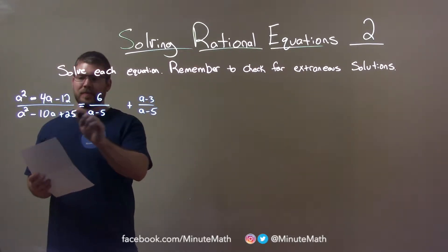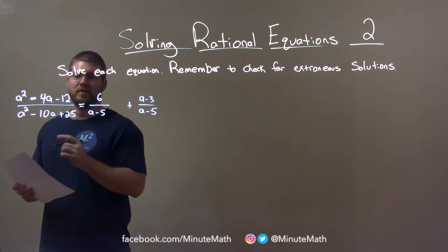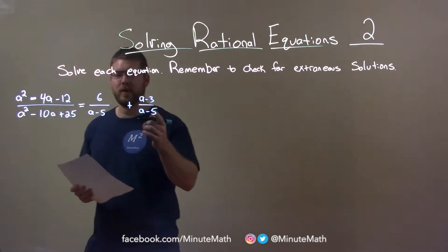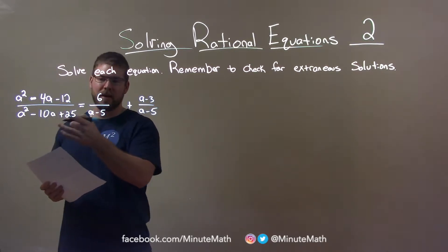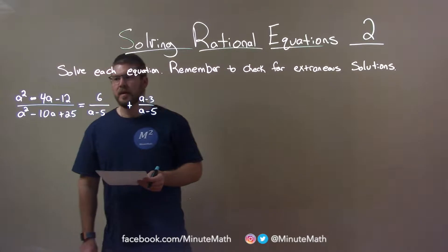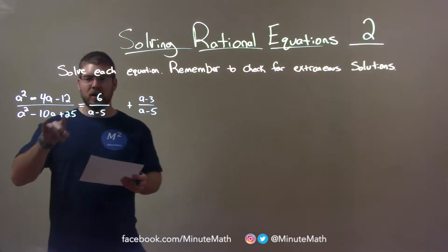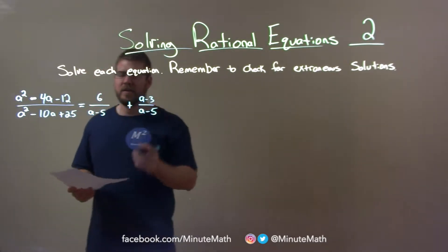I know that because if I multiply it by itself, a times a is a squared, a times minus 5 is minus 5a, minus 5 times a is minus 5a, so minus 10a, and negative 5 times negative 5 is 25. That means this will factor out as well. I'm just going to make it all the same denominator. Eventually we'll cancel.